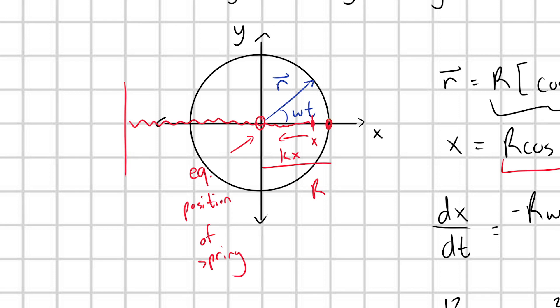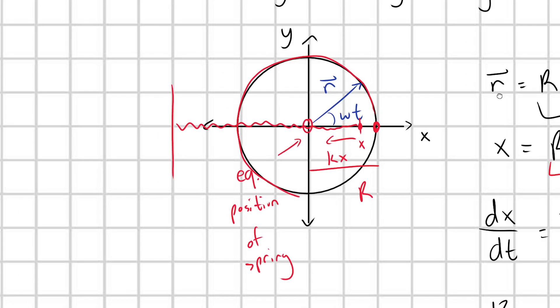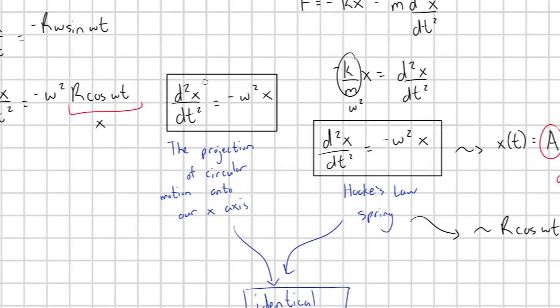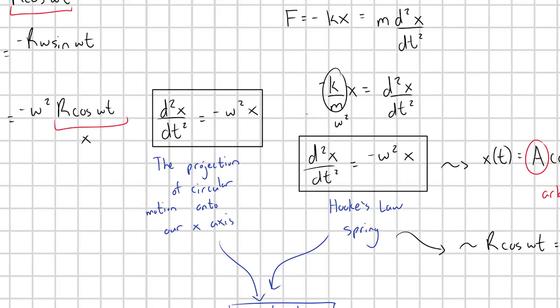Just as though I started a turntable, and this turntable has a particle circling on it and I project that motion onto the x axis. These motions will be identical if I set the angular velocity of this turntable to something very specific. What angular velocity do I need to set the turntable at? Well, let's think.